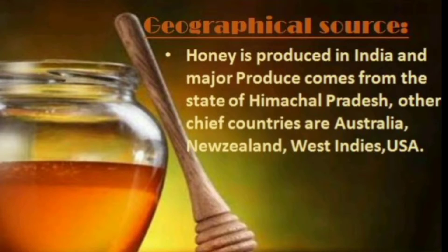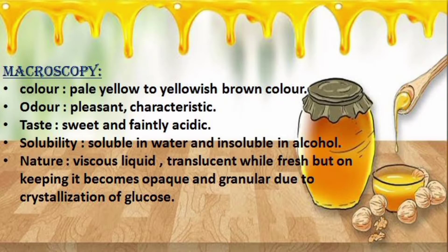Now for honey's macroscopy: it is a familiar drug. Its color is pale yellow to yellowish brown. It has a characteristic, very pleasant odor. The taste is very sweet, and sometimes, if stored, it can be slightly acidic.